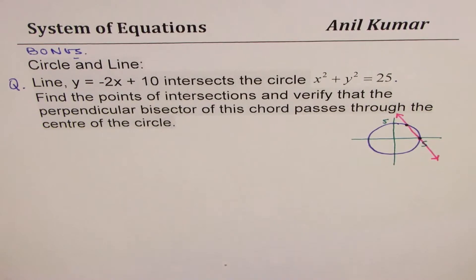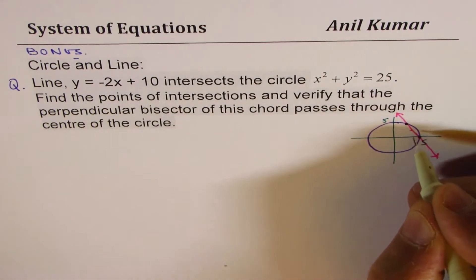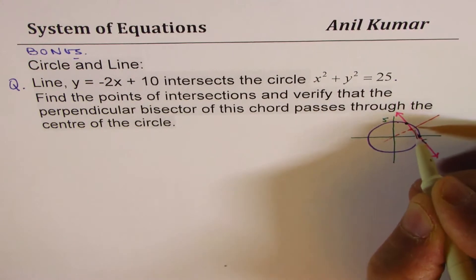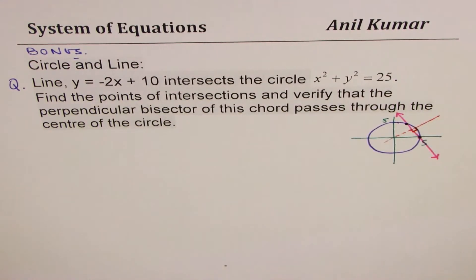The perpendicular bisector of this chord passes through the center, also finding the midpoint. If I bisect it through the midpoint going through the center, I find the midpoint and we're seeing it is going through it. So I hope the question is absolutely clear.